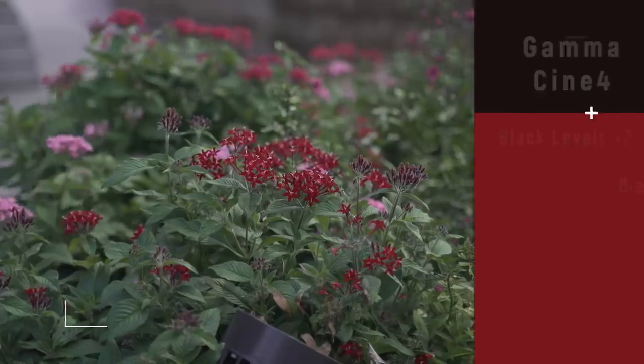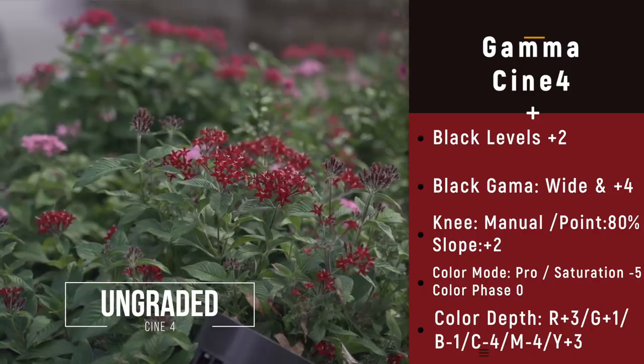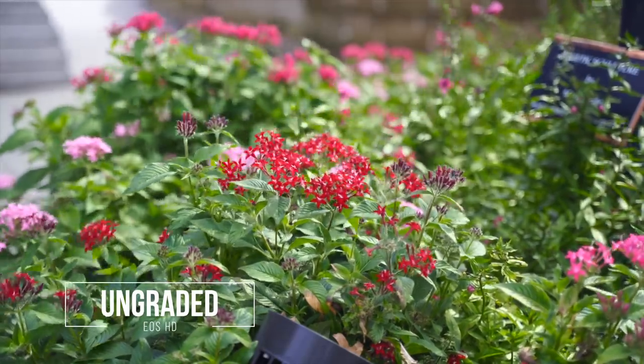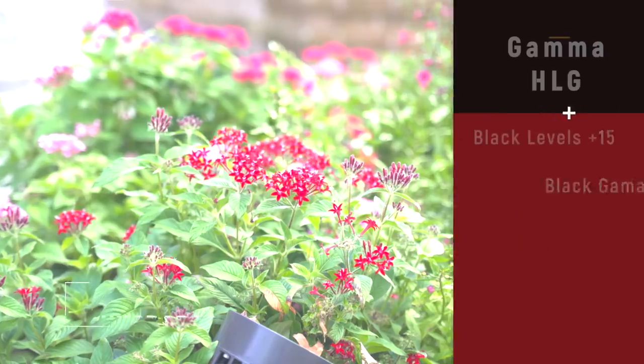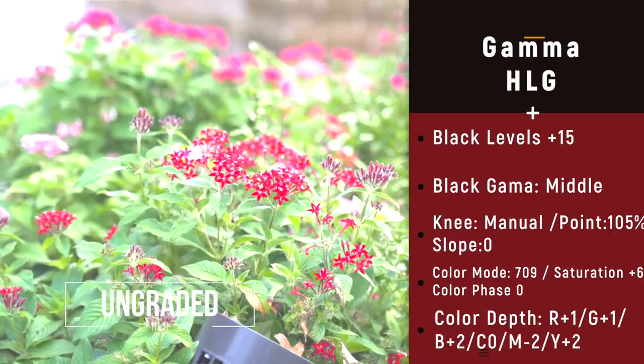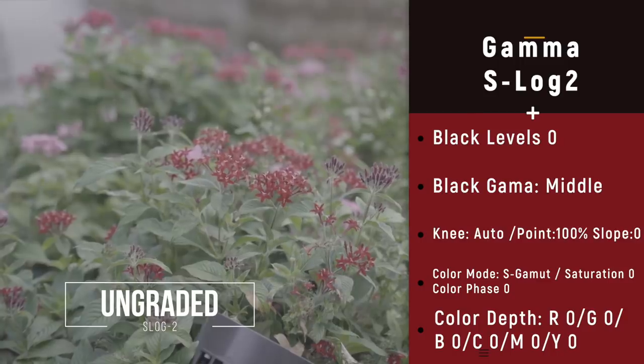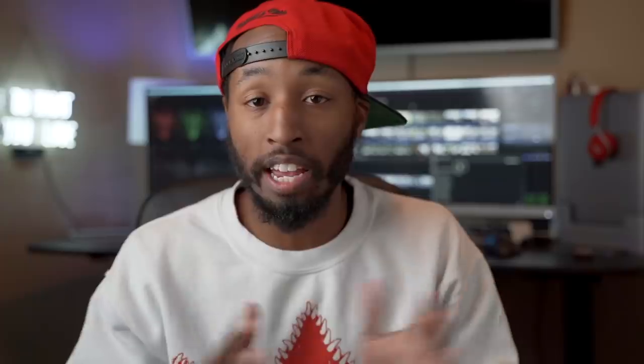The first profile I used is picture profile 1, which is my Cine 4 profile. This is actually the same one I used in my low light test, and it's honestly been my favorite up to this point. The second one is EOS HD's profile — a custom profile created by EOS HD, which they technically charge for, so I can't give out that data. Picture profile 3 is a complete HLG profile, basically a way to get HDR out of your camera and more color accuracy. And last but not least, picture profiles 7 and 8 are both S-Log profiles — one being S-Log 2 and the other S-Log 3. We'll touch on all of these shortly.